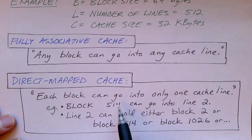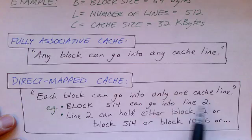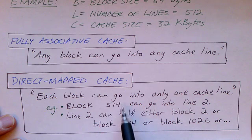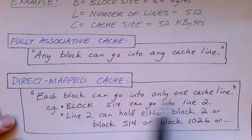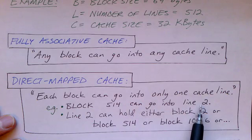For example, block 512 might go into line zero, block 513 might go into line one, and block 514 can only go into line two.